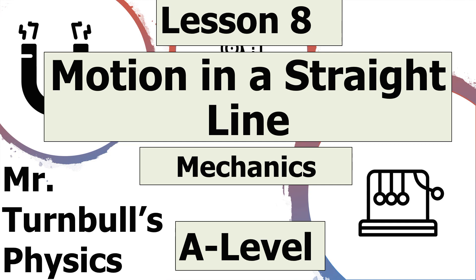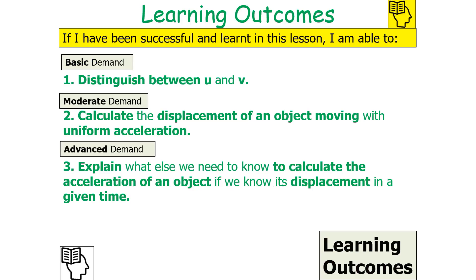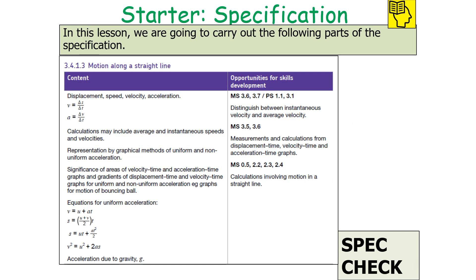Hello and welcome to this lesson on motion in a straight line, which is part of the mechanics topic in AQA A Level Physics. In today's lesson, we're going to look at how you can calculate the motion when an object undergoes constant acceleration. By the end of the lesson, we should be able to distinguish between u and v, calculate the displacement of an object moving with uniform acceleration, and explain what else we need to know to calculate the acceleration of an object if we know its displacement in a given time. This covers section 3.4.1.3 of motion along a straight line.